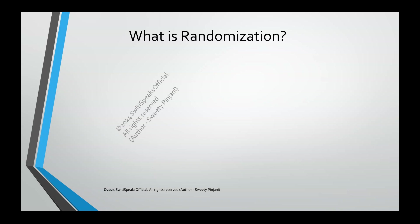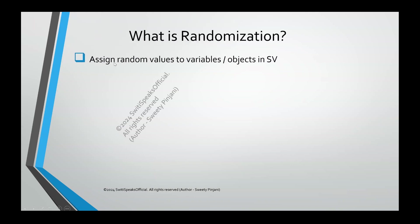Now let's get started with this series, which is System Verilog Randomization. First, we want to understand what is randomization. As the name suggests, randomization means something is going to be random. From the name we understand that. Now let's see what is this thing which is going to be random — randomization means we are randomizing something.